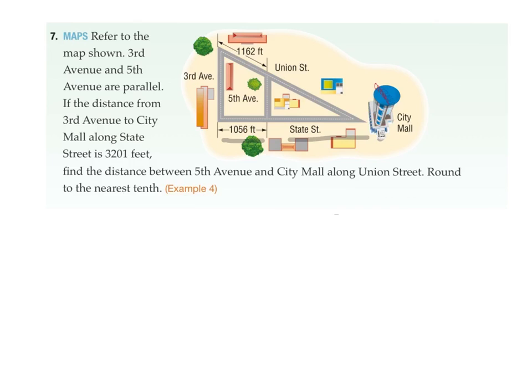From the diagram, you were told that from 3rd Avenue to 5th Avenue is 1056, and from 3rd Avenue to 5th Avenue going towards Union Street is 1162. What else does it tell you? From 3rd Avenue to the City Mall along State Street, so this distance, then gives you 3201. And the question's asking you find the distance between 5th Avenue and the City Mall. So what they're asking you to find is that distance and that distance only. So be careful of the question.